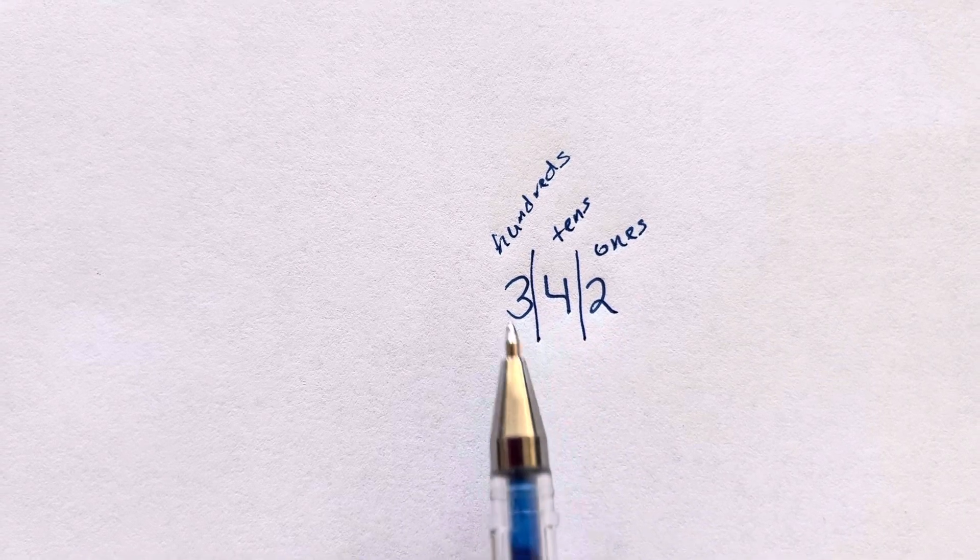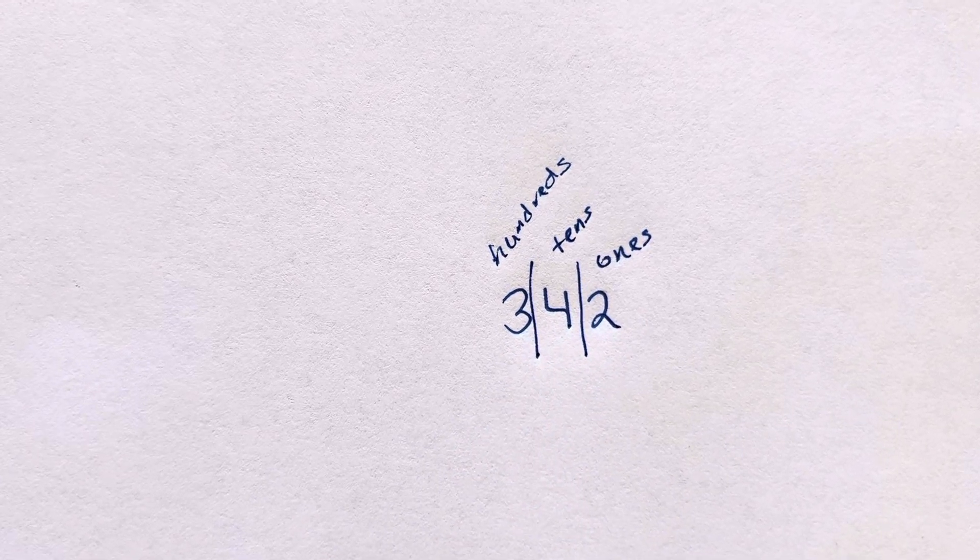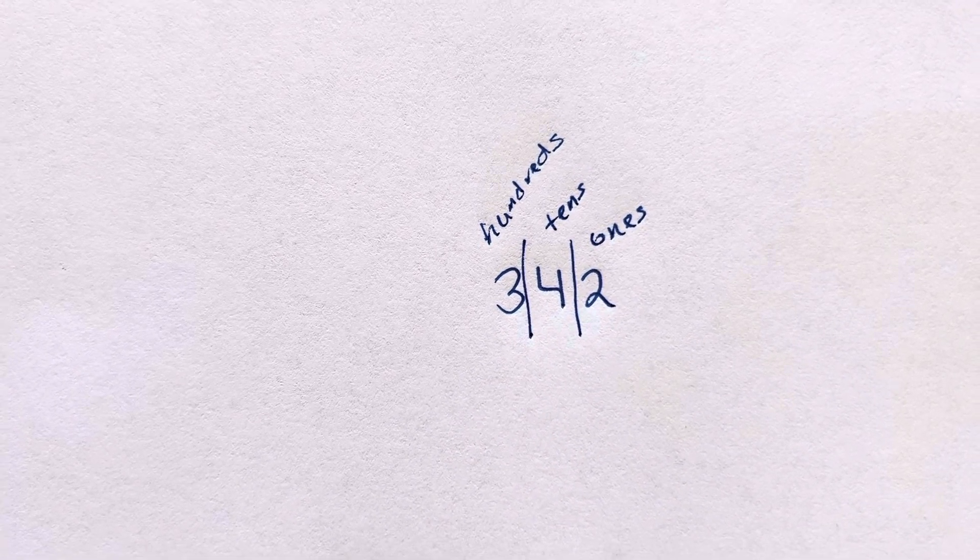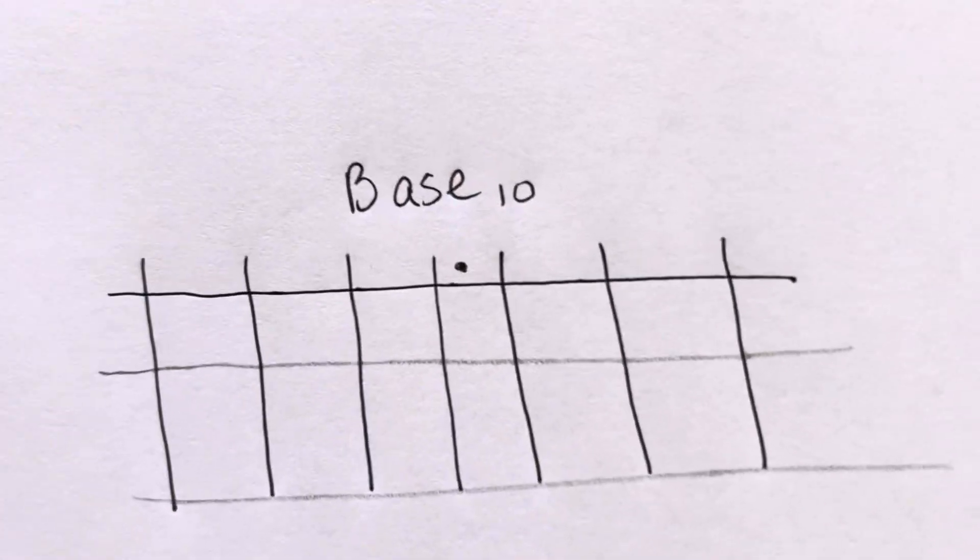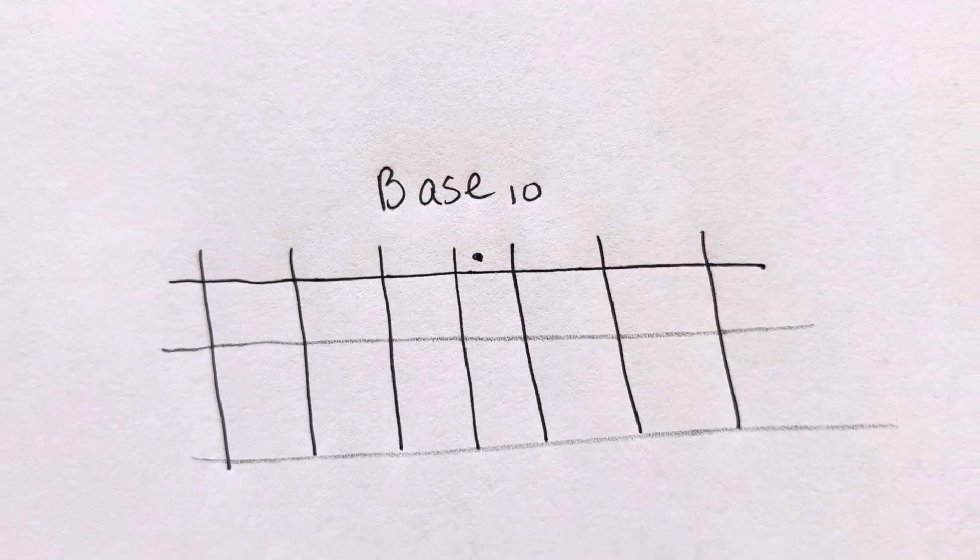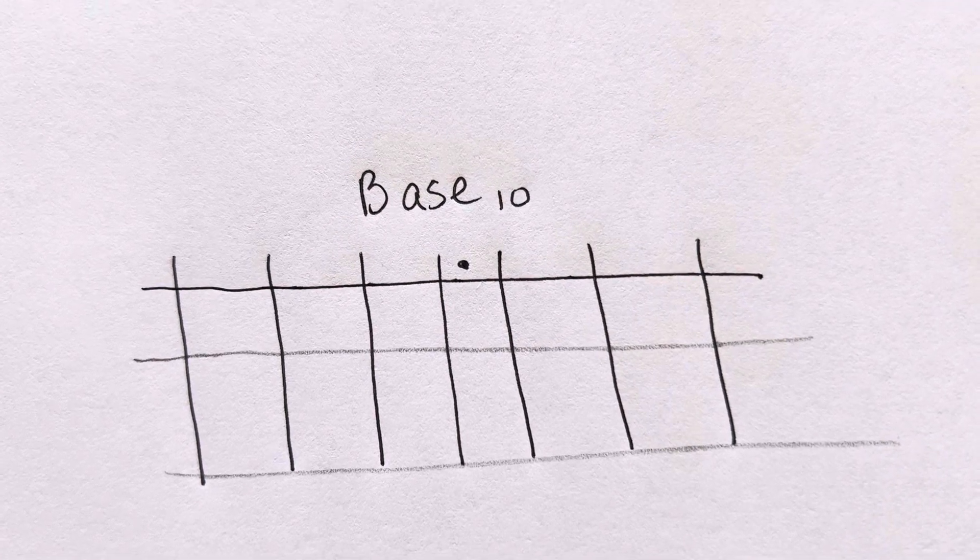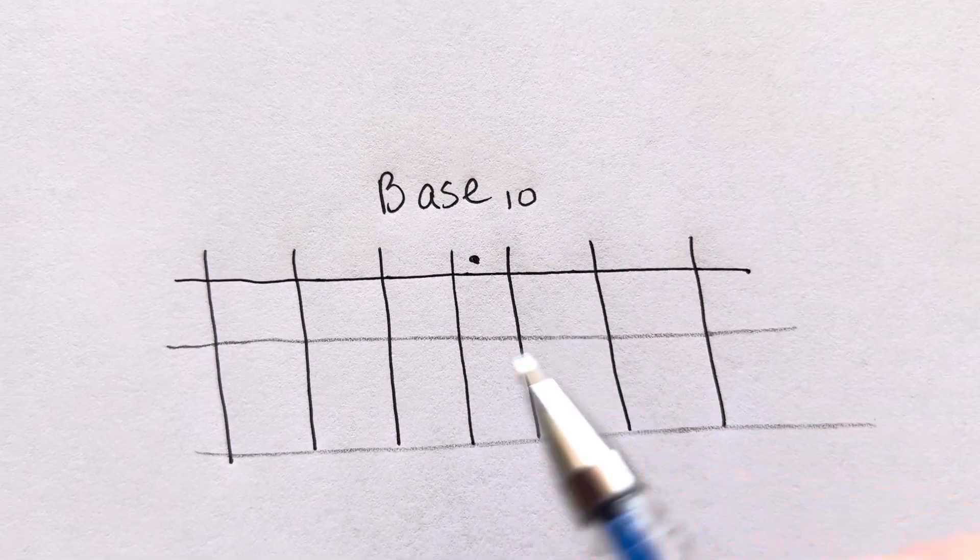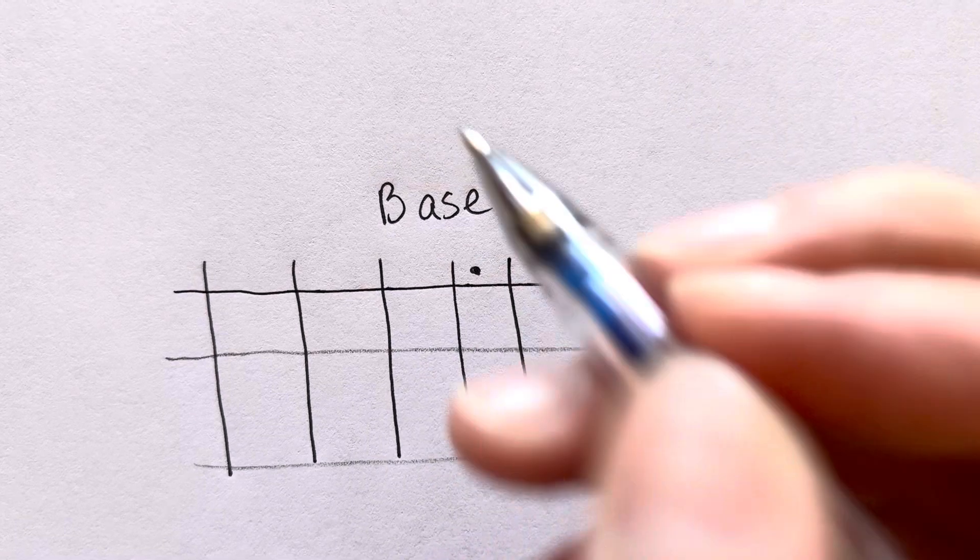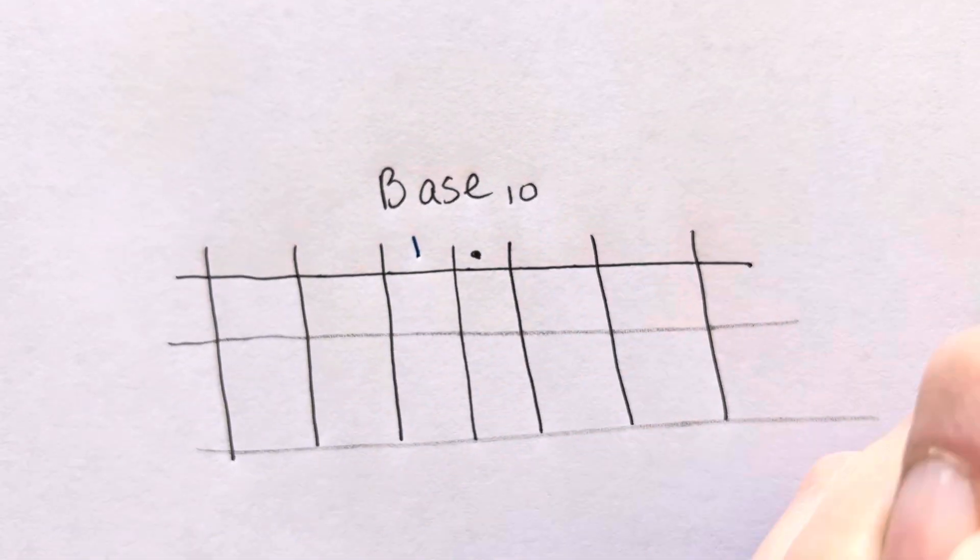So 342 is the same as saying you have two ones, four tens, and three hundreds, right? You have that down because you're used to base 10. Base 10 is what we think of for most things. Most the time in our math we're using base 10.